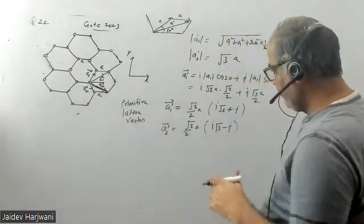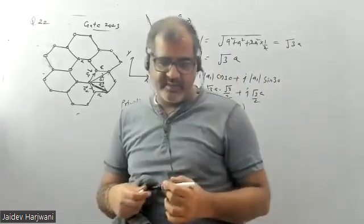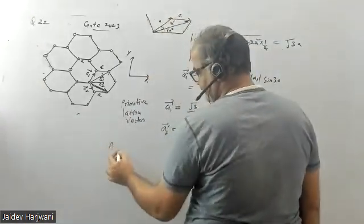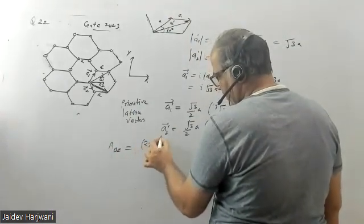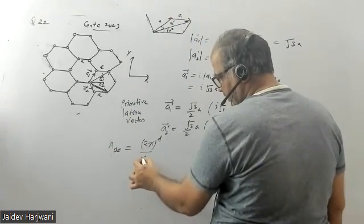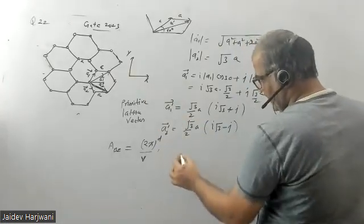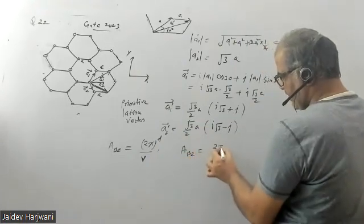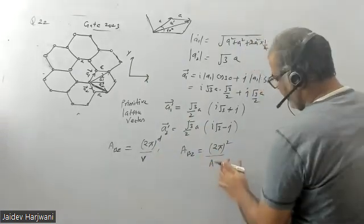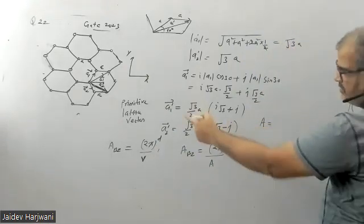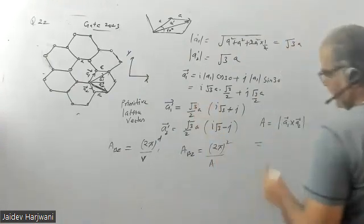We know that if we know the area of the primitive lattice cell, we can directly calculate the volume of the reciprocal lattice. The volume of the reciprocal lattice star vector equals (2π)^d divided by the volume of the direct lattice, where d is the dimension. In this two-dimensional problem, we write the area of the Brillouin zone equals (2π)² divided by the area of the direct lattice primitive cell.